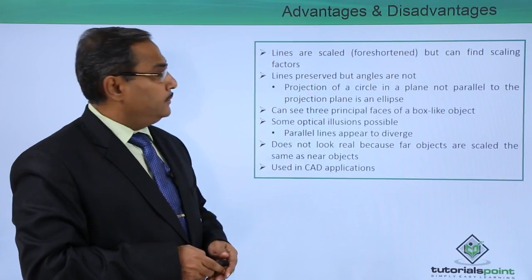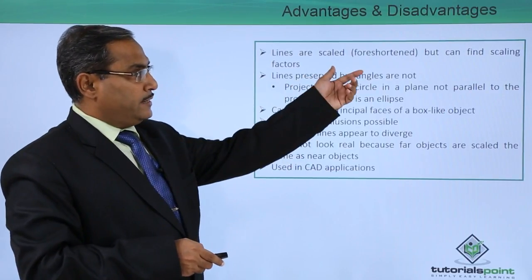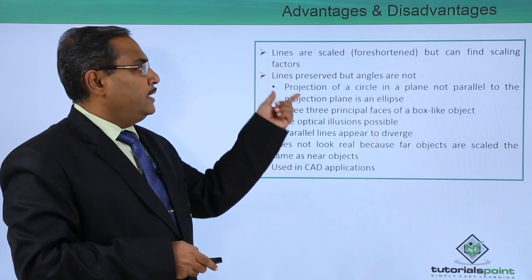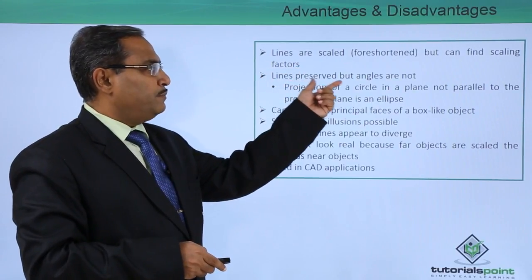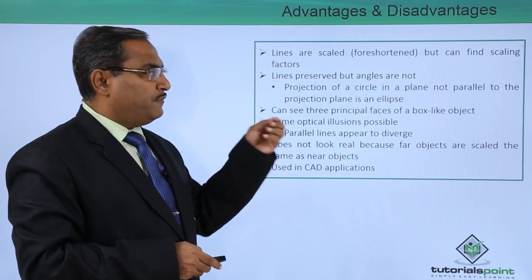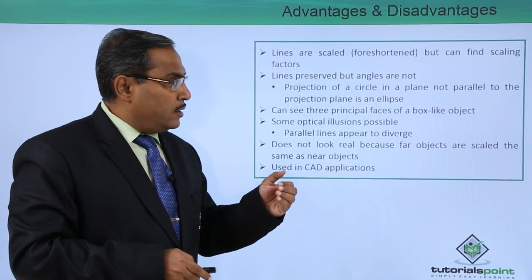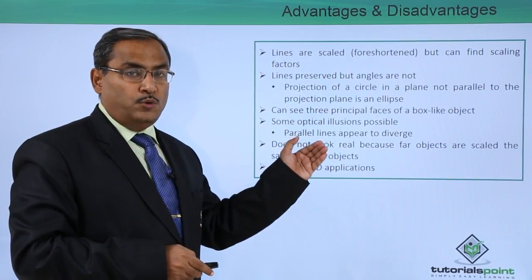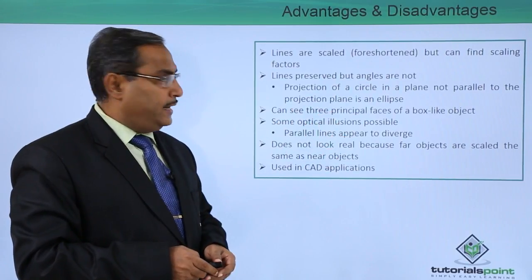Lines are scaled, that is foreshortened, but can find scaling factors. And lines preserved, but the angles are not. Projection of a circle in a plane, but the plane is not parallel to the projection plane, will be projected as an ellipse.